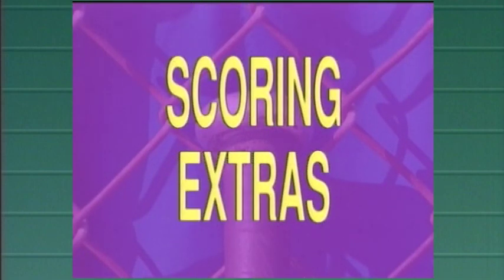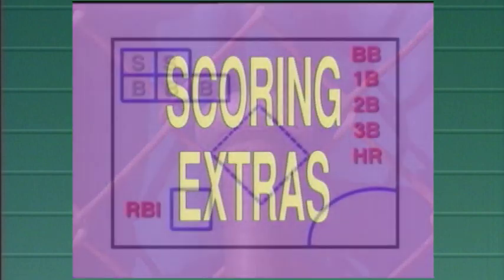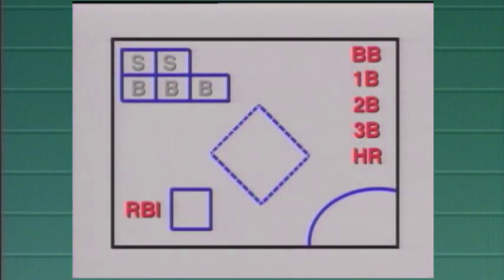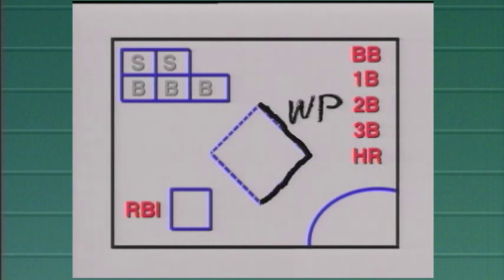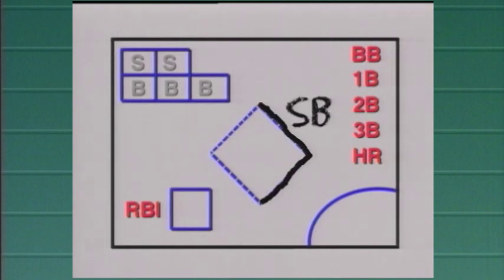Now let's look at some final scoring extras. With a runner on first base, here are three ways that a runner can advance: either on a wild pitch, which would be a WP; or on a passed ball, which would be a PB; or a stolen base, which would be an SB.